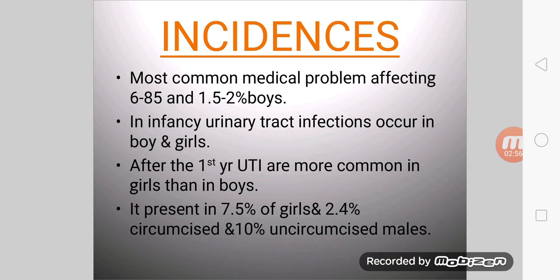Now we deal with the incidences. UTI is one of the most common medical problems, affecting 6 to 8% of girls and 1.5 to 2% of boys. In infancy, urinary tract infections occur in both boys and girls. After the first year, UTIs are more common in girls than in boys. It presents in 7.5% of girls and 2.5% of circumcised and 10% of uncircumcised males.